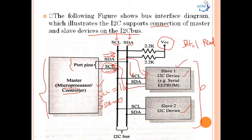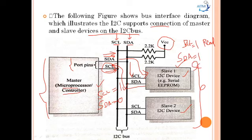Upon receiving the acknowledgement from the slave, the master sends 8-bit data over the SDA line. The master then waits for an acknowledgement from the device upon byte transfer completion for a write operation, and sends an acknowledgement bit to the slave for a read operation. Finally, the master terminates the transfer by setting SDA = 1 while the SCL clock line is also set to 1, indicating the stop condition. This is how the master and slave communicate through the I2C bus.